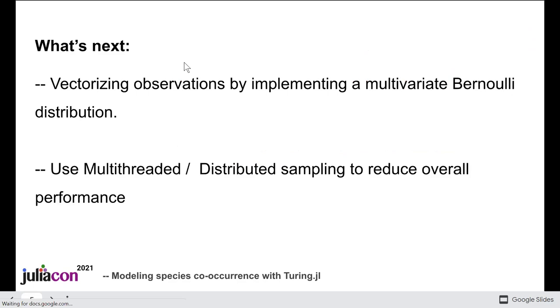However, we think that Julia can still do a better job, so in the next steps we'll try to remove the remaining loops through the implementation of a multivariate binomial distribution that will allow us vectorizing the observations.